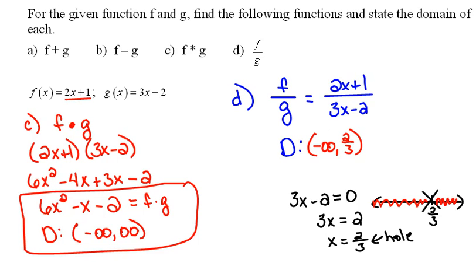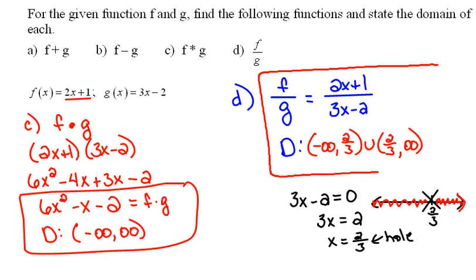Then we could use everything to the right of it. So that would be starting at 2 thirds, but not including, that's why we use the parenthesis, all the way up to infinity. And we would join those things together with a union symbol. So our final answer would look like that.